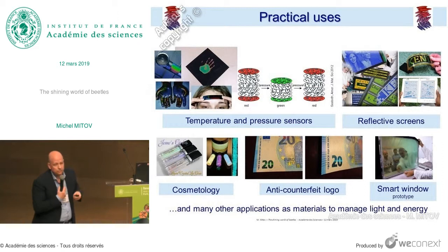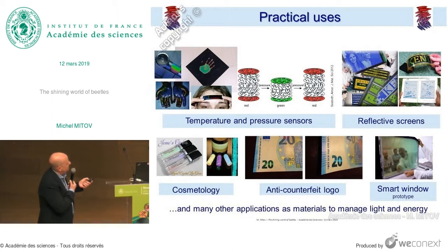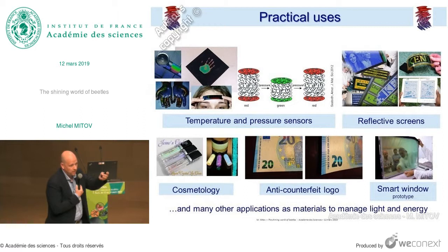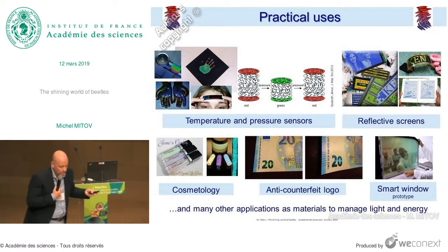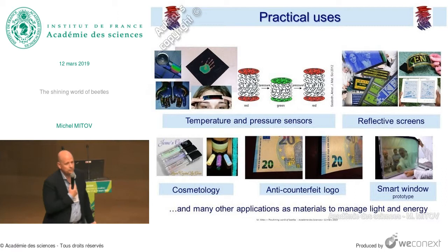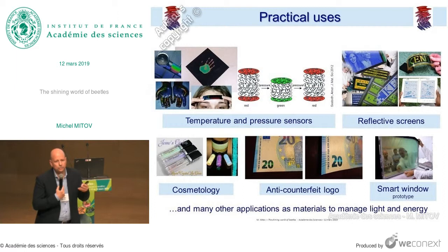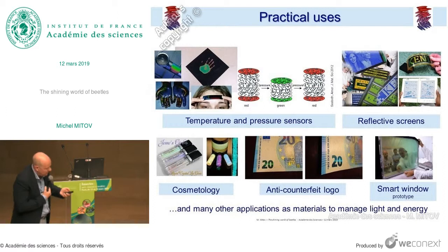They are also used in reflecting screens to display simple information, in cosmetology — a very huge market — and as anti-counterfeit logos, where the color shifts from green to blue with oblique incidence due to the angle in the Bragg law. There are also innovative future applications like smart reflective windows, for which we currently only have prototypes, because the helix of the cholesteric structure may be untwisted with an electric field, allowing you to switch between a broadband reflective state and a transparent state to tune solar and light energy and save energy.